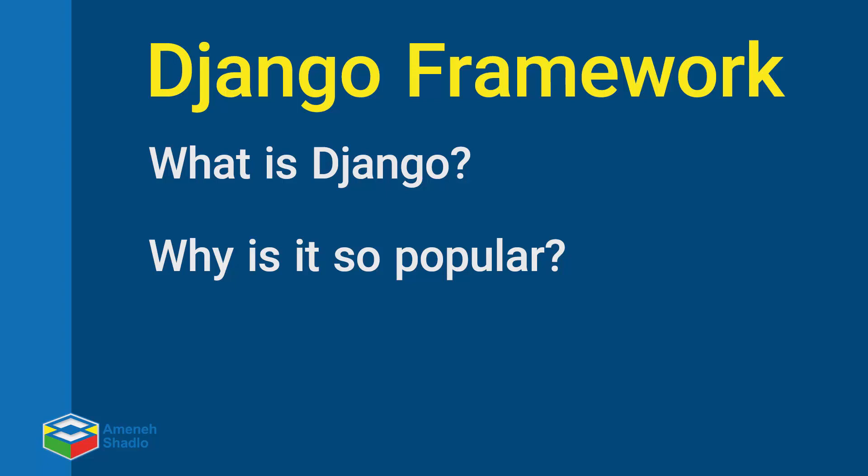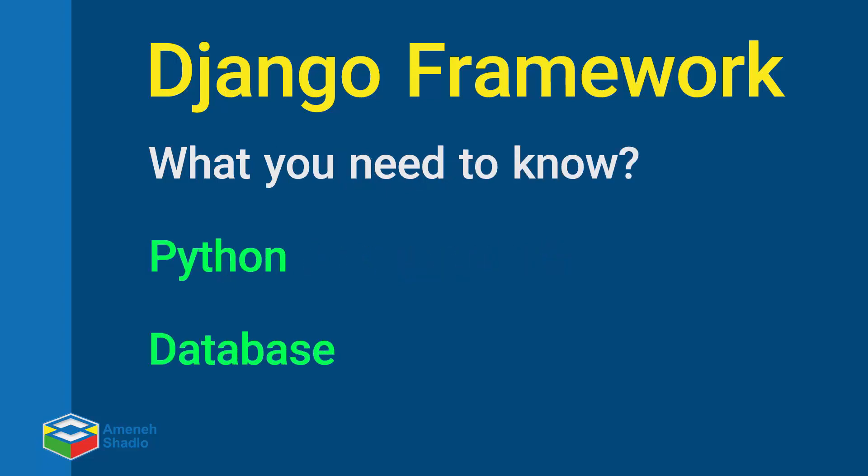Now that we know what Django is, let's talk about what you need to know to take this course. For starters, you need to know the basics of Python as well as object-oriented programming, such as classes, inheritance, and so on. You should also know the basics of relational databases and concepts such as tables, primary keys, relationships, and so on.